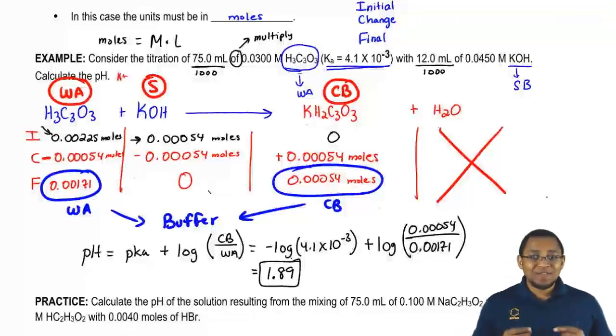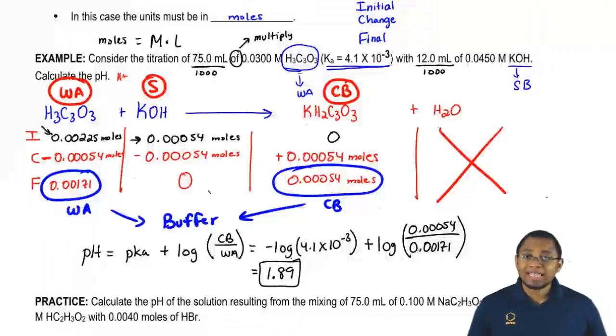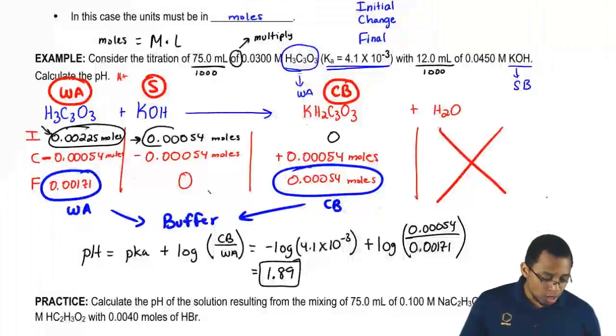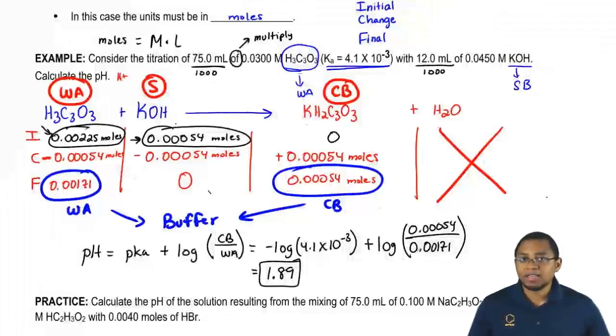An ICF chart is very detail-oriented. Make sure you've paid attention to all the steps that I've talked about. We know we should have a buffer at the end because one of the ways to create a buffer is mixing a weak acid and a strong base. As long as the weak acid is larger in initial amount than the strong base, you will have a buffer at the end. The theory we learned earlier, we're now seeing it applied to using calculations. ICF charts are much more detail-oriented, so we're going to be doing a lot of them.